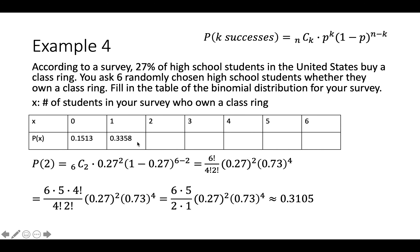Again, N and the probabilities stay exactly the same, but now K = 2 — the number of successes we're looking for is 2 — so 2 appears in the K positions. Going through the same process gives the next probability, which I place in the table.